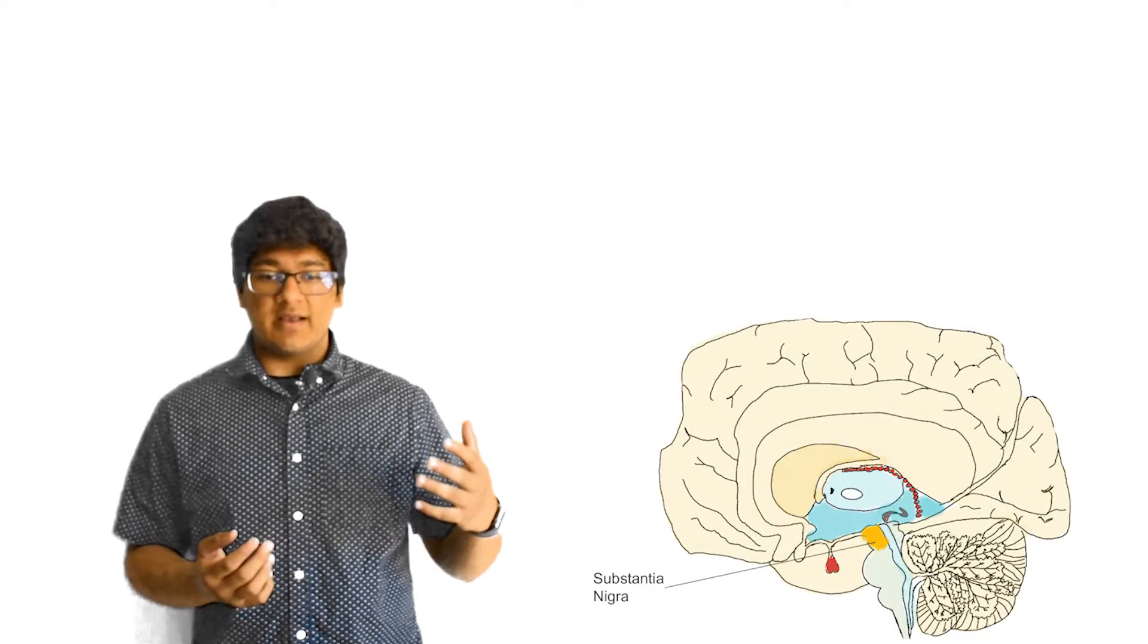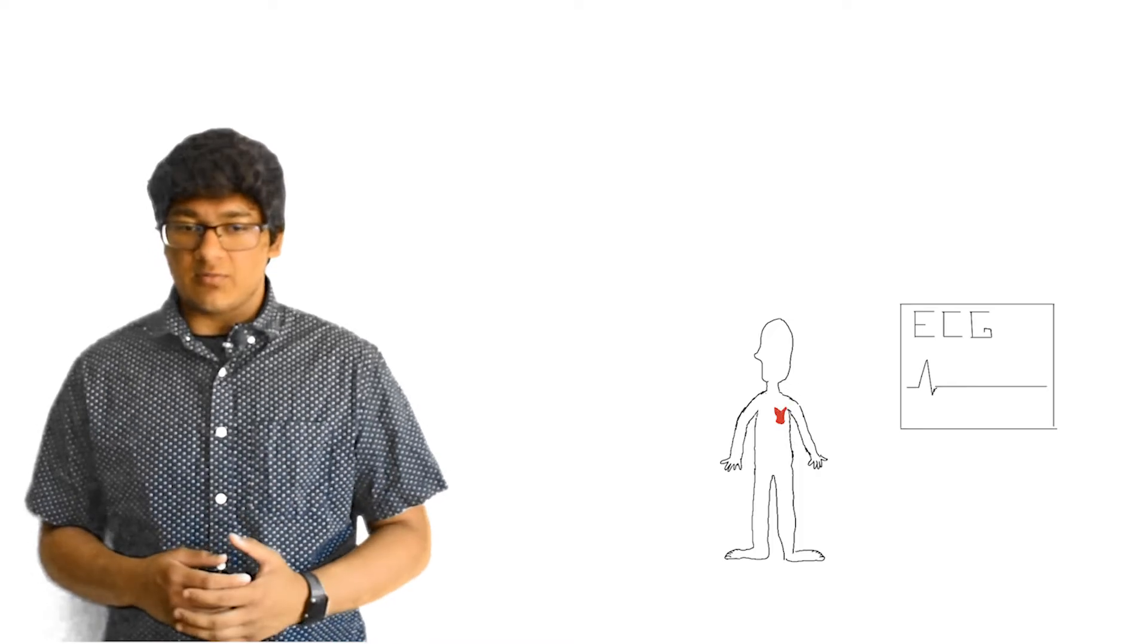They attack the basal ganglia and substantia nigra regions by exciting the neurons, and essentially change the synaptic impulses required for normal movement. This leads to involuntary twitching of muscles, cardiovascular problems, along with all other sorts of symptoms.